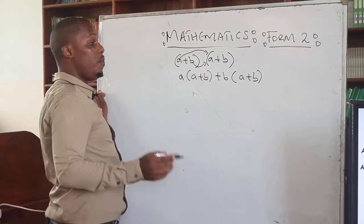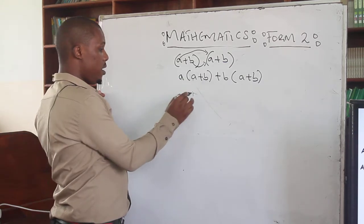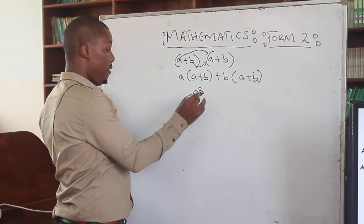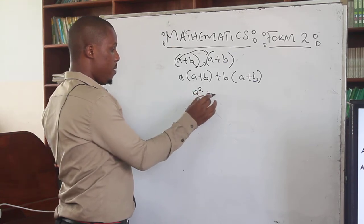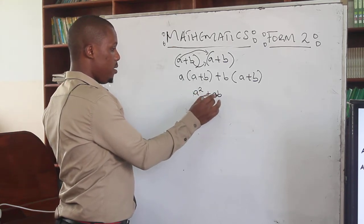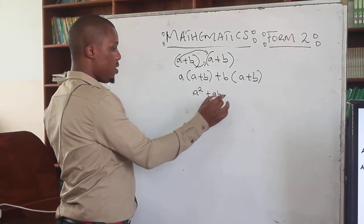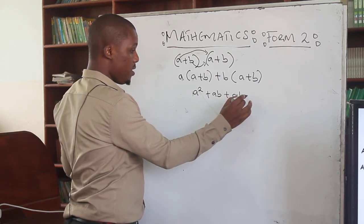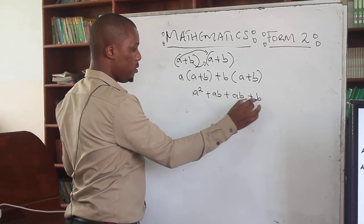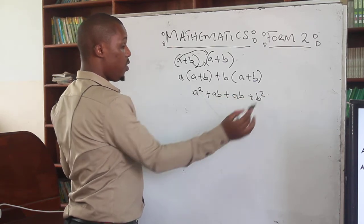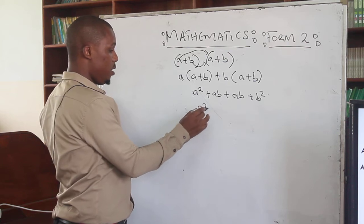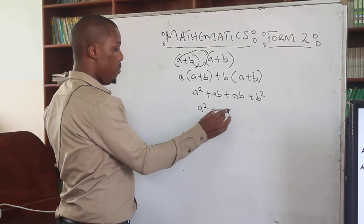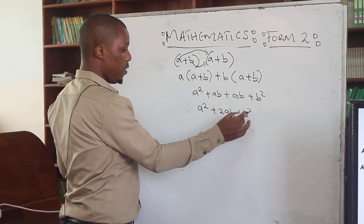So now when you open the bracket, you are going to have A times A, which gives us A squared. Then A times B, that's going to be plus AB. Then this one is going to be plus another AB. And here you are going to have plus B squared. So if you collect the like terms together, it's going to be A squared plus 2AB plus B squared.